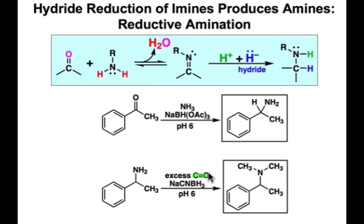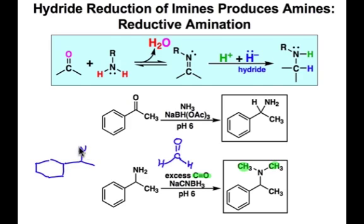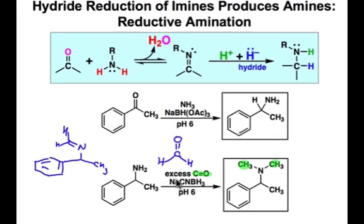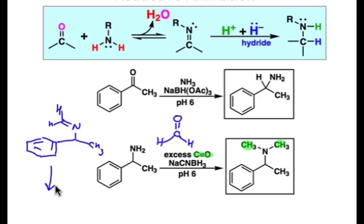In the second example, what we're doing is adding two methyl groups. Those methyl groups come from formaldehyde, and so you should write the mechanism for this, which is really two successive reductive aminations. We'll first make the imine of this amine with formaldehyde, and that's how we're going to put the first methyl group on that nitrogen. Following protonation of that imine and reduction, we'll end up putting the first methyl group on, and the intermediate that forms is shown here.